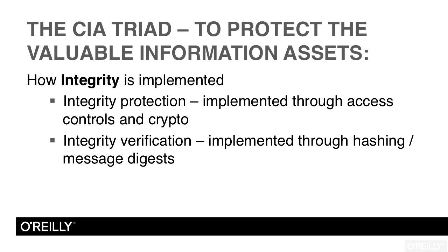Next is the integrity of the information. How do we implement integrity to protect our valuable information assets? There are two different facets of integrity protection. One is the actual protection of integrity — keeping the bad guy away from it so he can't alter the data. Just like protecting confidentiality, we implement integrity protection through access controls and cryptography. If the bad guy can't physically get to the information asset, he can't alter it inappropriately, and therefore the integrity of the information remains high.